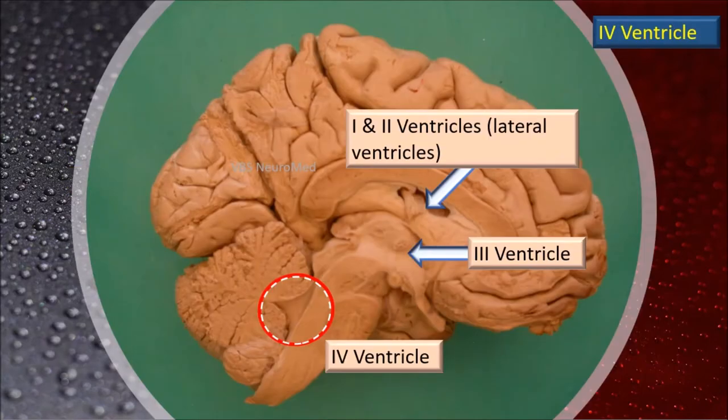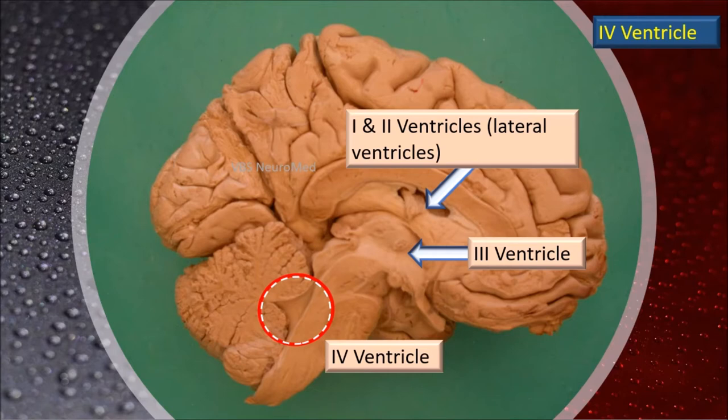Let's take an overview of the location of the various ventricles of the brain. The first and second ventricles, collectively called the lateral ventricles, are in the cerebral hemispheres — they are the cavities of the telencephalon. The third ventricle is the cavity of the diencephalon, so it will be in the vicinity of the thalamus and hypothalamus. The last one is the fourth ventricle, which will be in the vicinity of the brain stem.